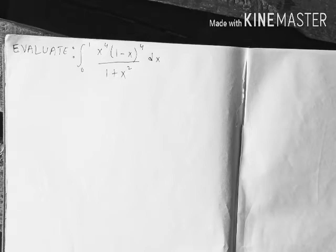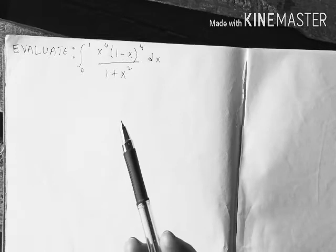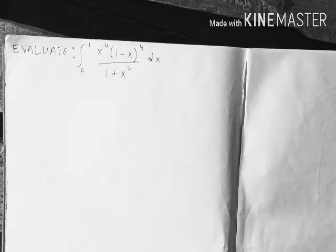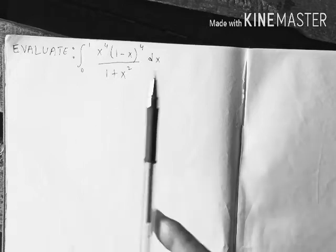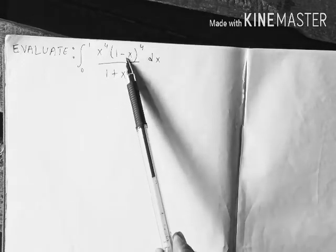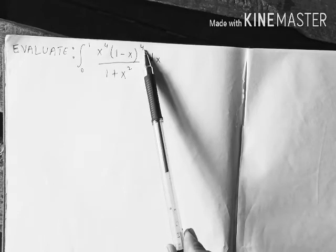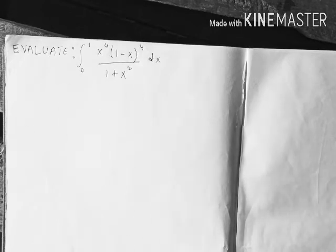So let's get started. The integral from 0 to 1 of x to the 4 times (1 minus x) to the 4, over (1 plus x squared), dx. We are not going to integrate directly. What we are going to do is expand (1 minus x) to the 4 using the binomial theorem.